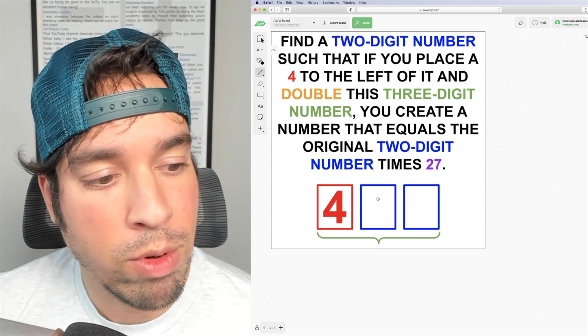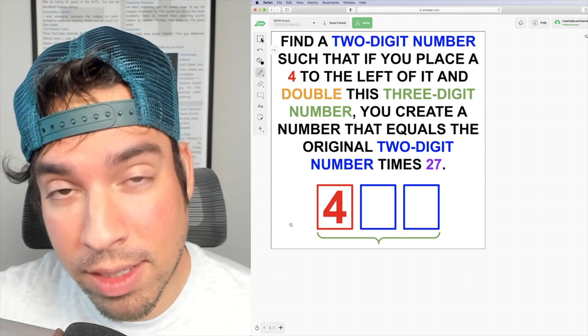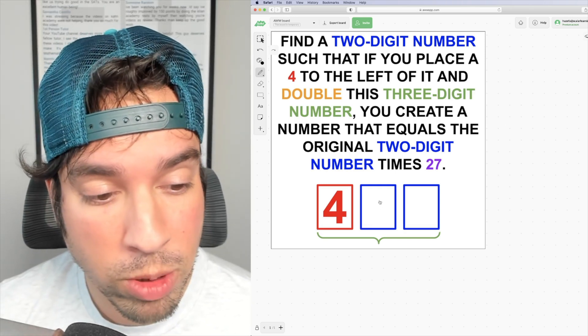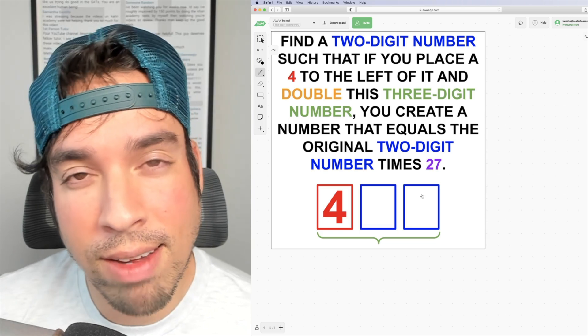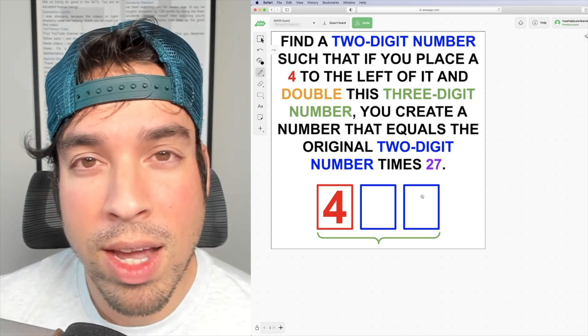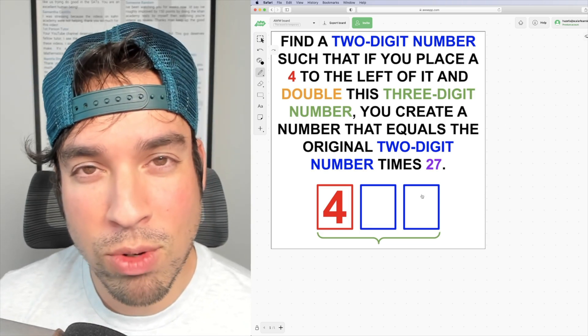And again, just to reiterate, if we put a 4 here, making it 400 and something, you then double it, it would equal 27 times the original number. Go ahead and hit that pause button and see if you can figure it out.